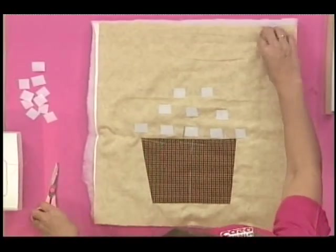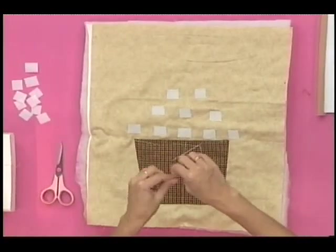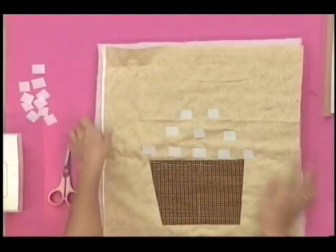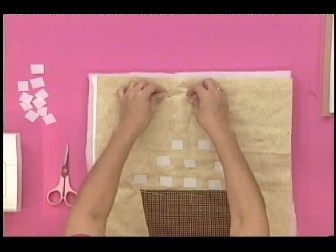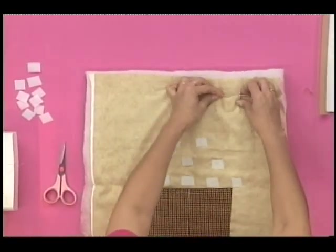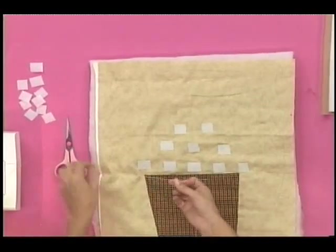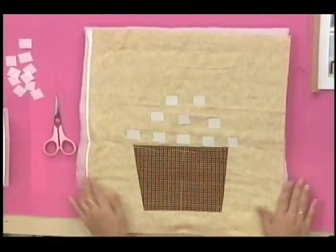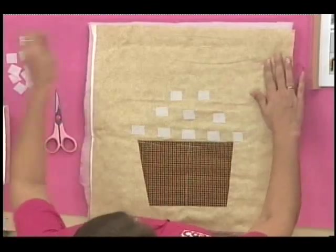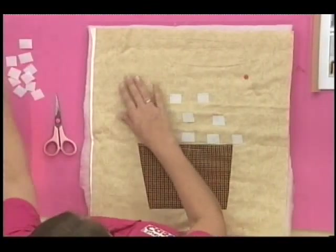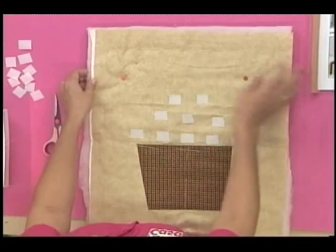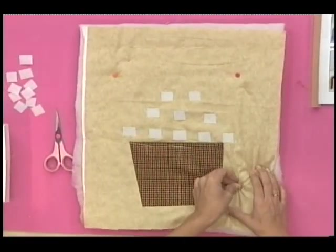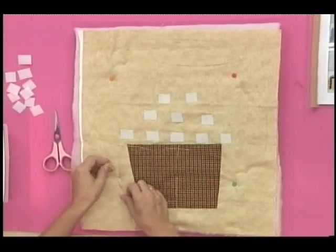Y por último vamos a hacerle otra aquí arribita. Ahí están todas las bastas. Una vez que usted tiene todo su juego de baño, que le quitó el airecito, que quedó todo basteadito, sin embargo, fíjense que no conforme con la basta, me voy a ayudar con mis alfileres. Las ultras delgaditas. Y me voy a ayudar con todo esto que está acá.